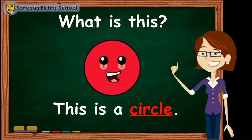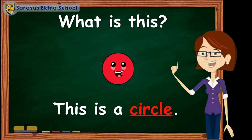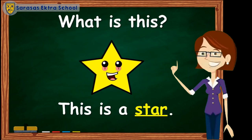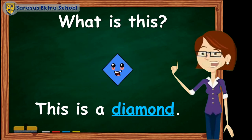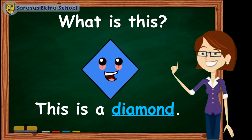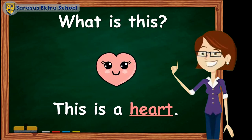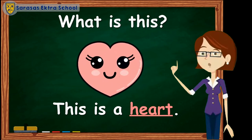What is this? This is a circle. What is this? This is a star. What is this? This is a diamond. What is this? This is a heart.